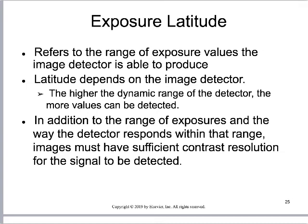The final thing to look at is exposure latitude — how broad an area in which we can make an exposure and still get an image. Latitude depends largely on the image detector. The higher the dynamic range of the detector — the more shades of gray it can represent — the higher the exposure latitude. The exposure latitude of digital imaging systems is much broader than it was in the days of film, so we have a tremendous amount of play in these digital systems.